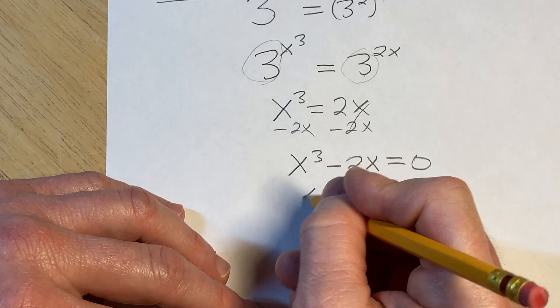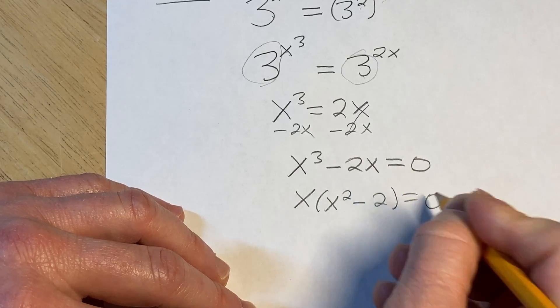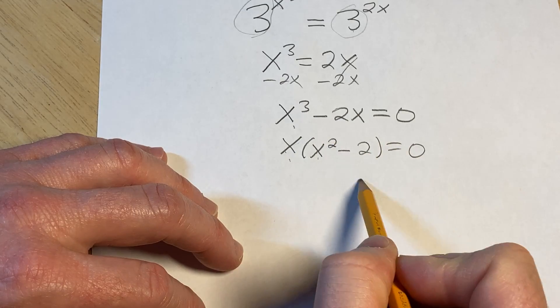So now we can factor out an x. We have x times x squared minus 2 equals 0. And you can check, x times x squared is x cubed, x times 2 is 2x.